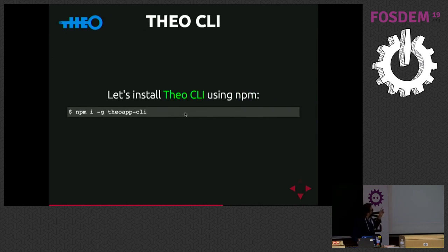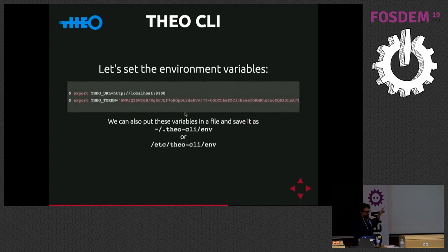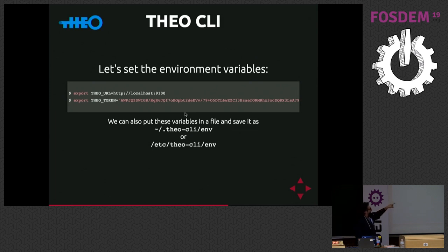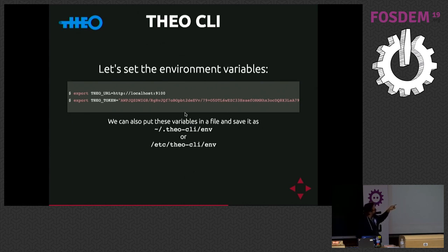For Theo CLI, we have to install it — I install it globally with NPM. I will export two variables I need: THEO_URL and THEO_TOKEN, where this one is the admin token used before. We can also store these variables in two different places: per user in ~/.theo in the home directory, or system-wide in /etc/theoapp-cli.env.